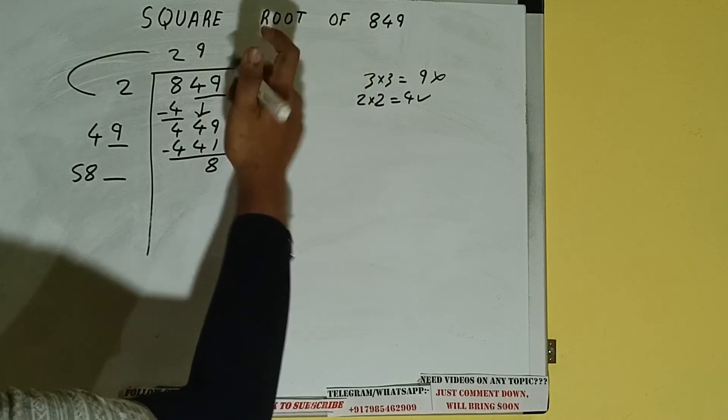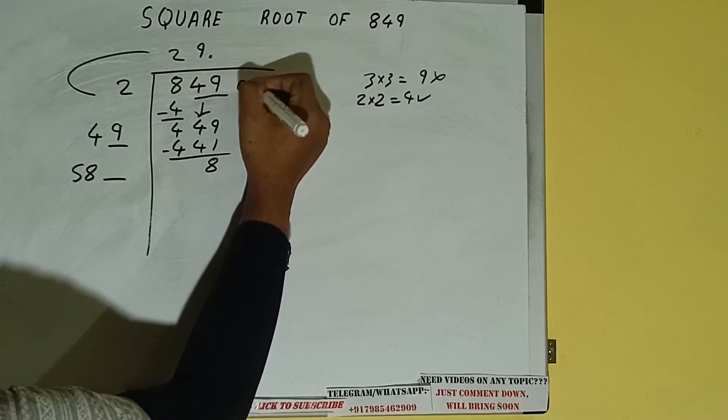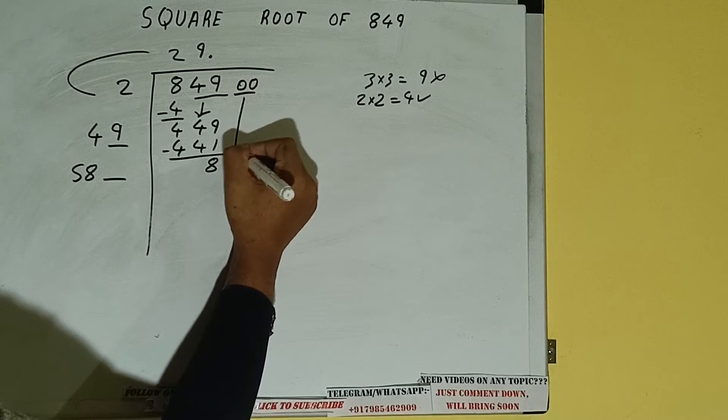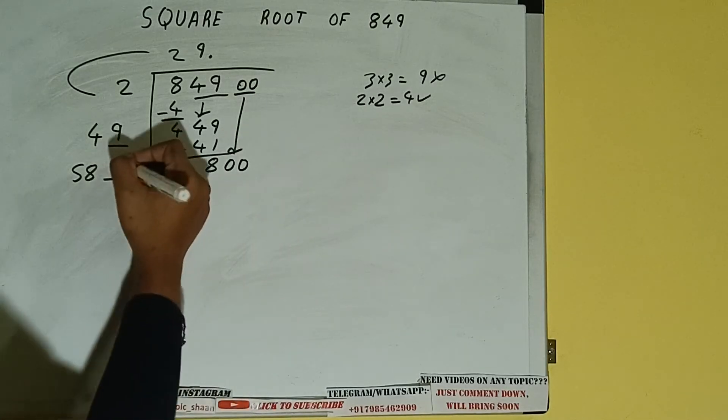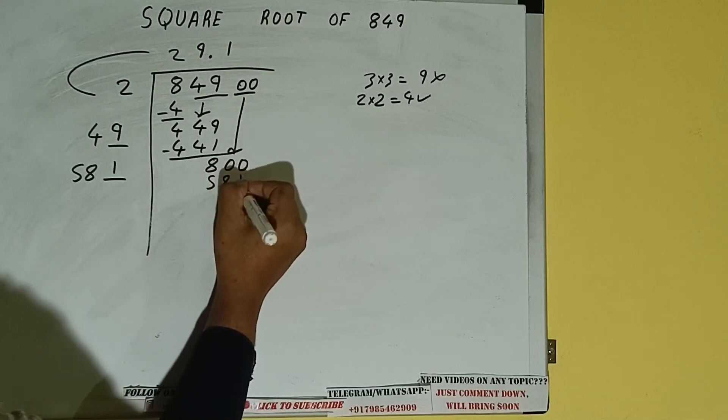But we don't have more pairs, so we'll put decimal. Once we put decimal, we can bring a pair of zeros down and it will be 800. Now we can write 1 here and 1 here. 581.